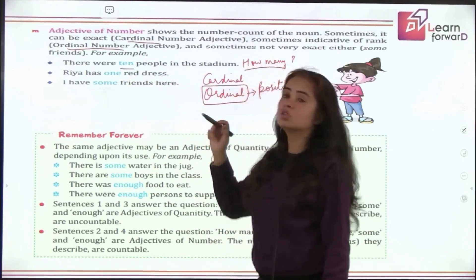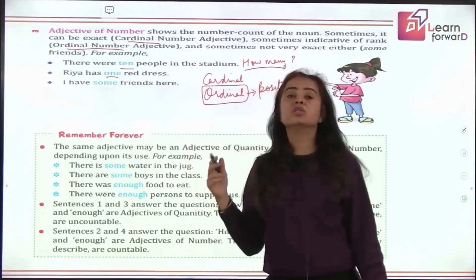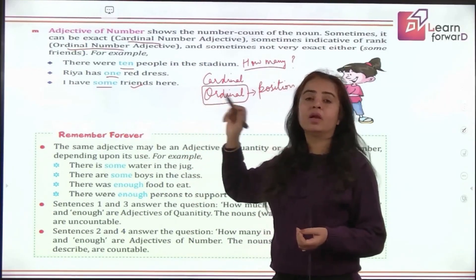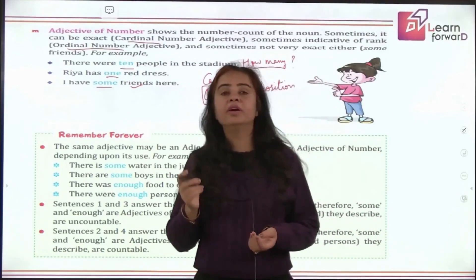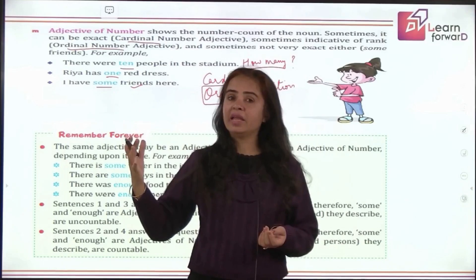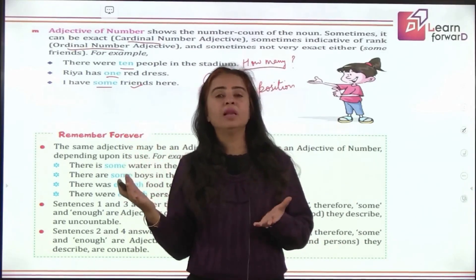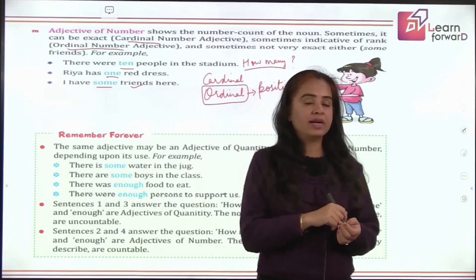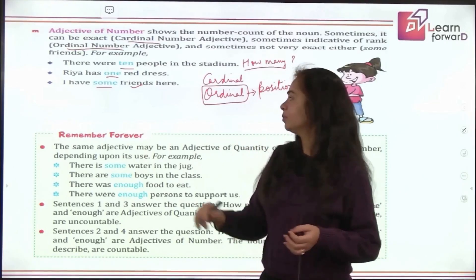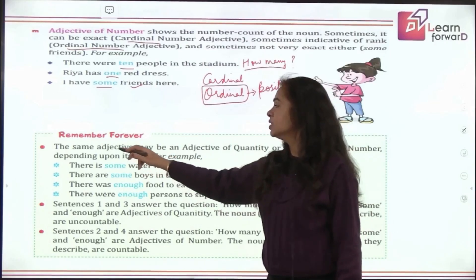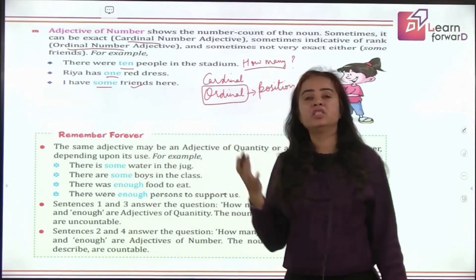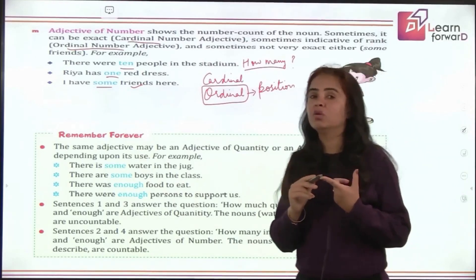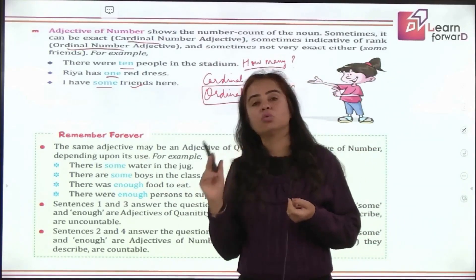Like 'there were 10 people' — we can count people. 'Rhea has one red dress' — a dress can be counted. But 'I have some friends here' — we are not giving an exact number, just saying 'some.' You have to check whether the noun can be counted or not: 'I want some milk' — can I count milk? No. That will tell you whether the word is adjective of quantity or adjective of number. The same adjective, like 'some,' can be either type depending on whether the noun it describes is countable or uncountable.